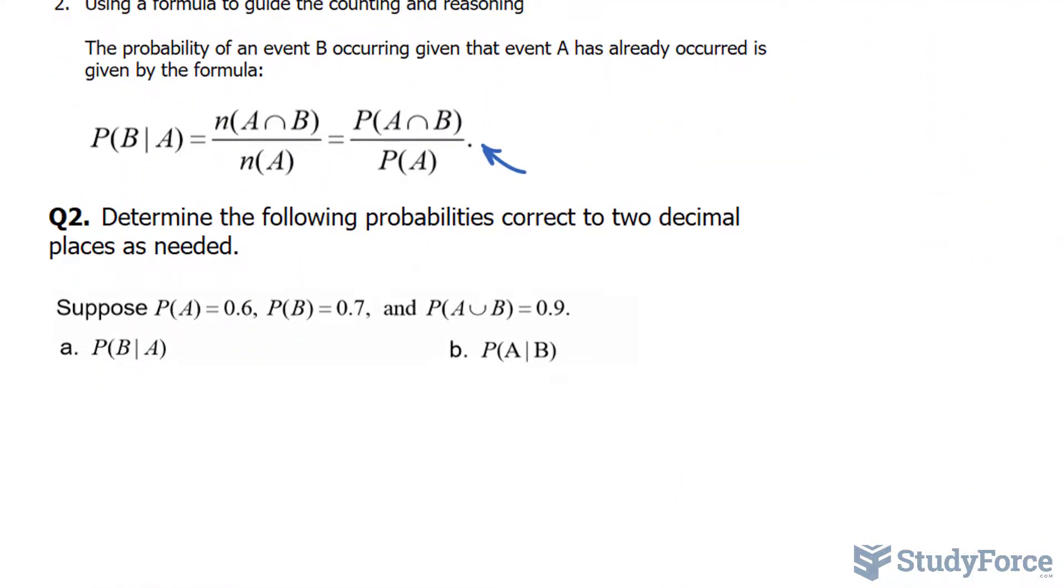Let's continue with another example. Determine the following probabilities correct to two decimal places as needed. We have to find the probability of B given A using the same formula as before.